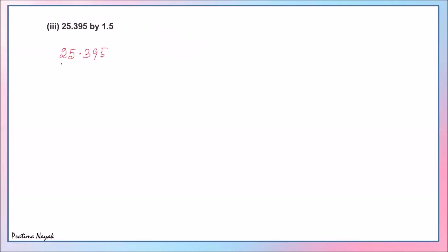Third part: 25.395 divided by 1.5. There is one digit after the decimal, so multiply by 10. We get 253.95 divided by 15. You can pause the video, try it yourself, and check your answer on screen.